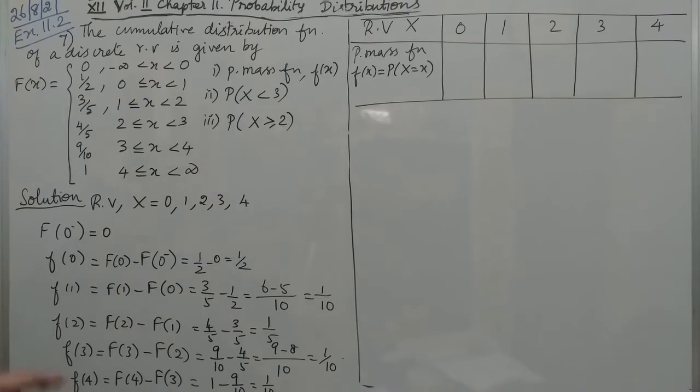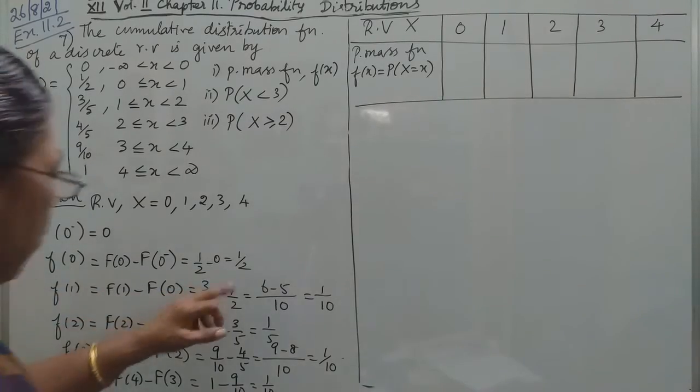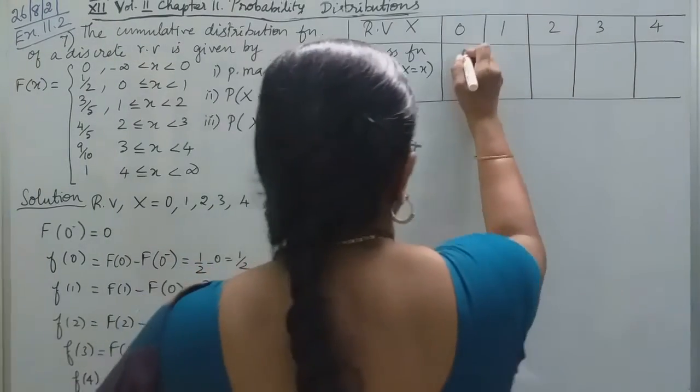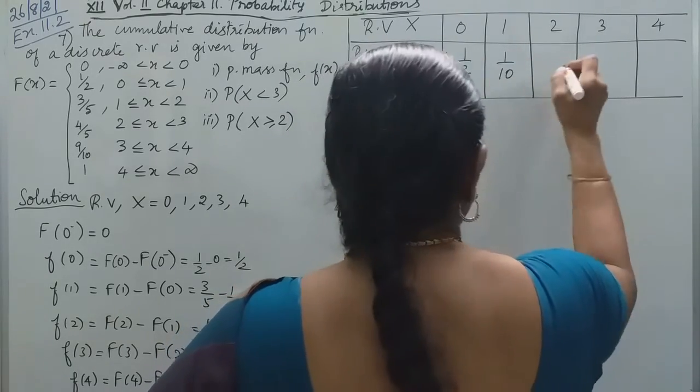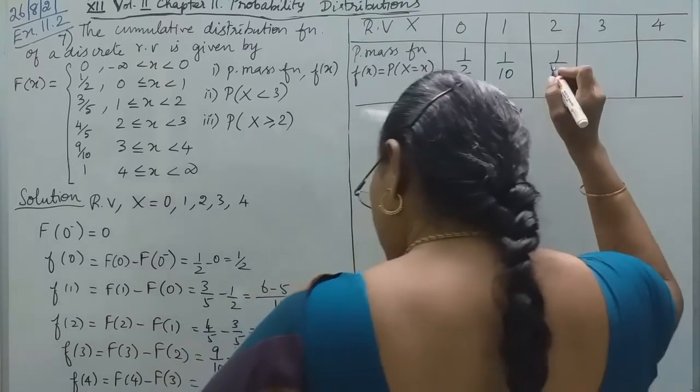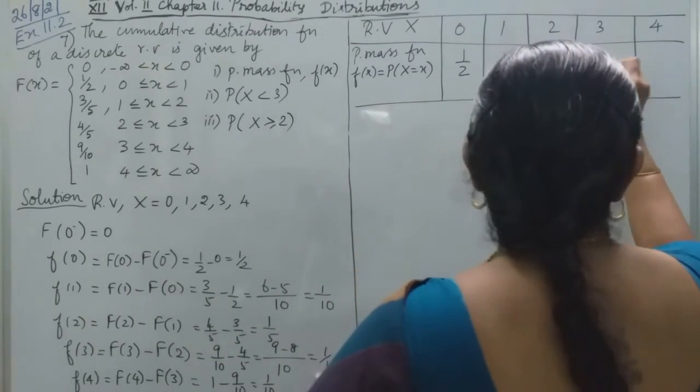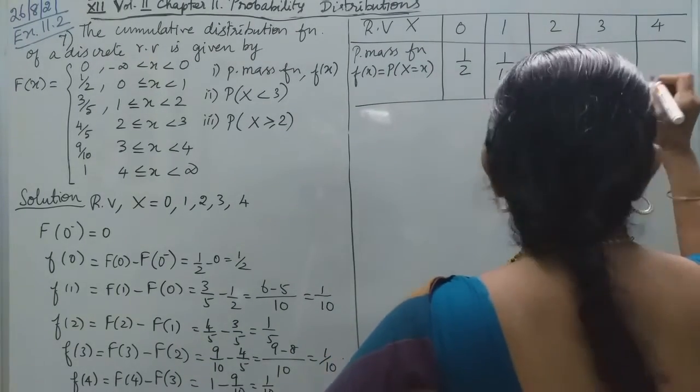Right, now small f(0) is 1/2, f(1) is 1/10, f(2) is 1/5, f(3) is 1/10, and the last one is also 1/10.